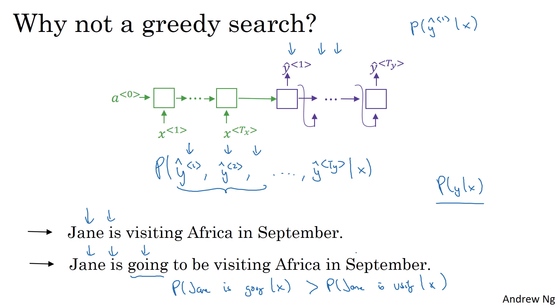I know this was maybe a slightly hand-wavy argument, but this is an example of a broader phenomenon where if you want to find the sequence of words, Y1, Y2, all the way up to the final word, that together maximize the probability, it's not always optimal to just pick one word at a time. And of course,